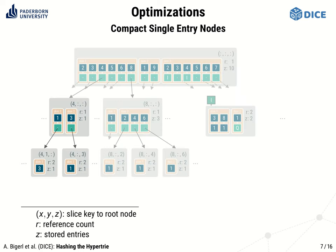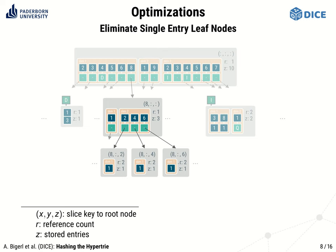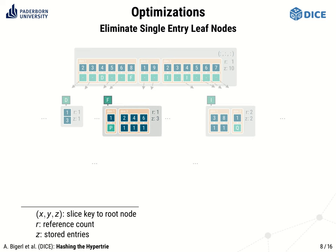Our next optimization deals with inner nodes that contain a single entry. They come with a considerable overhead for maintaining mappings to child nodes and the child nodes themselves. We eliminate this overhead by introducing a new node type named single entry node. If a leaf node has only a single entry, we can even go a step further. The identifier of a node takes more memory than the payload of a single entry leaf node, so we completely eliminate these nodes and store their entry instead in the place where the reference to them would be stored otherwise. In its second dimension, slice keys are not mapped to nodes anymore, but to the single entries of the former leaf nodes.